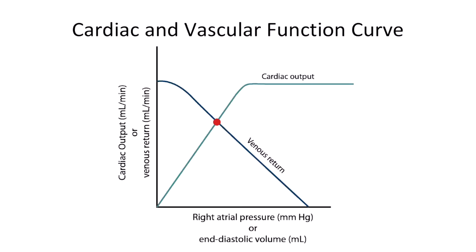With that in mind, let's return to the figure. Because the x-axis has two variables telling us essentially the same thing, I like to focus on whichever variable makes more conceptual sense when analyzing these figures. On the other hand, the y-axis has two variables telling us two different things. The first is cardiac output — how much blood leaves the heart — and the second is venous return — how much blood returns to the heart. The cardiac output variable is illustrated with the green curve, and the venous return variable with the blue curve. Let's separate the two curves for a moment and then return to this image.